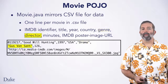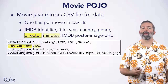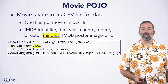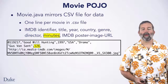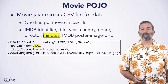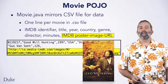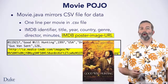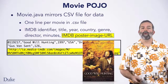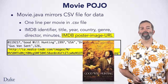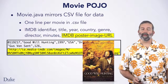Then there are the movie's directors, followed by the length of the movie in minutes — this movie lasts about 126 minutes. And finally, a URL for a poster image of the movie, such as the one shown here for the drama Good Will Hunting, created in 1997.